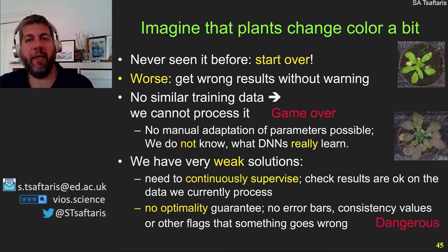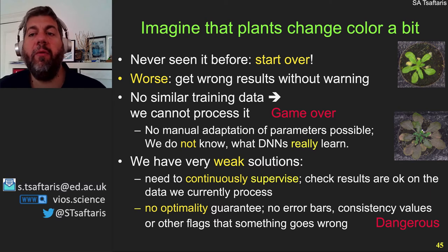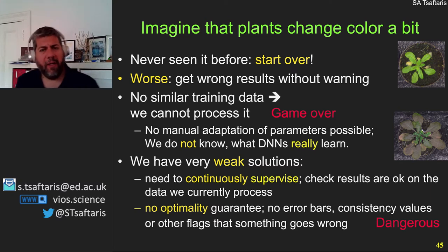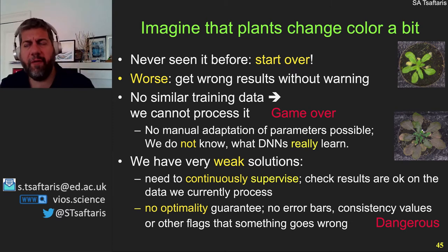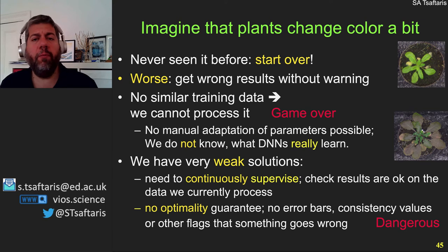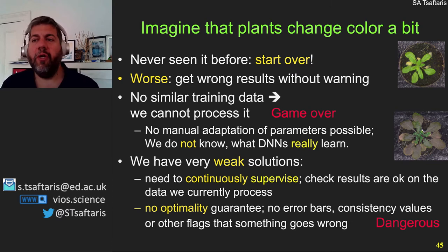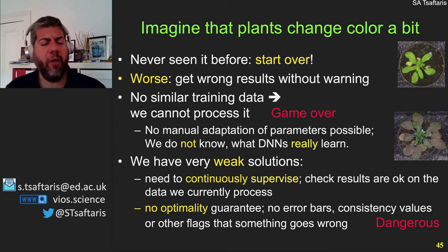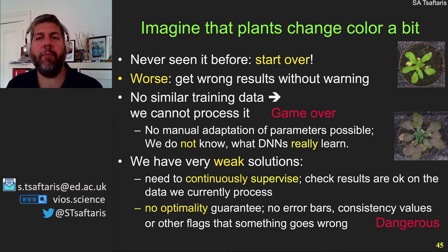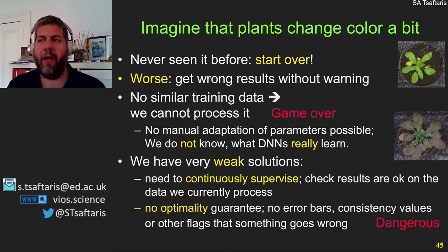We do not know what the neural network learns — and this is somehow game over. We build weak solutions that require continuous supervision, checking results, and continuous evaluation with no optimality guarantee. We don't know if the mistake will be too big or too small if things go wrong. The classical solution people suggest is just to keep collecting more data. I'll tell you why this is not the greatest idea.